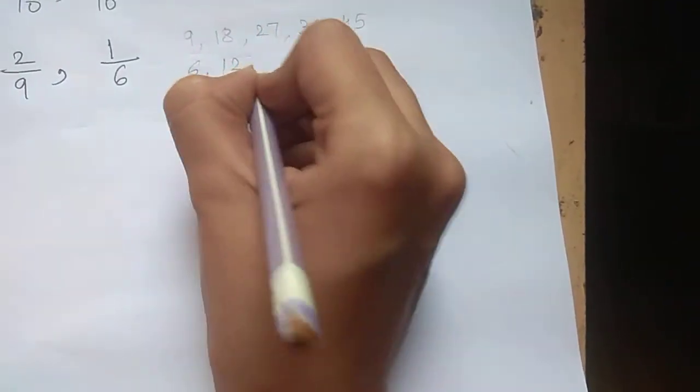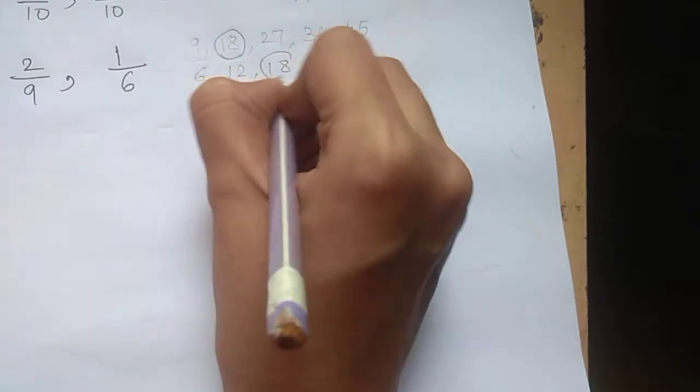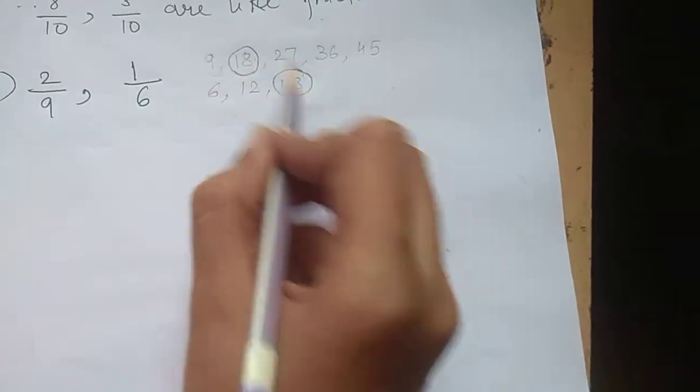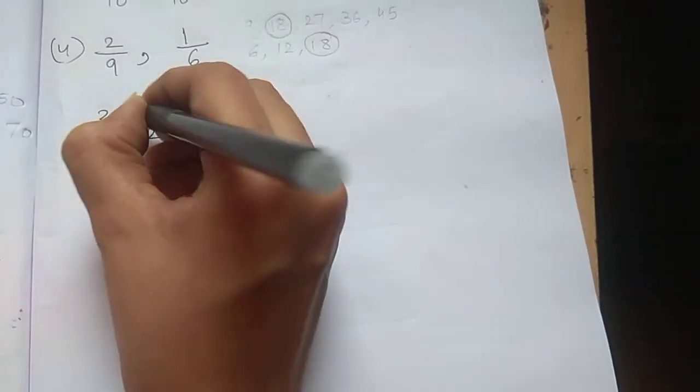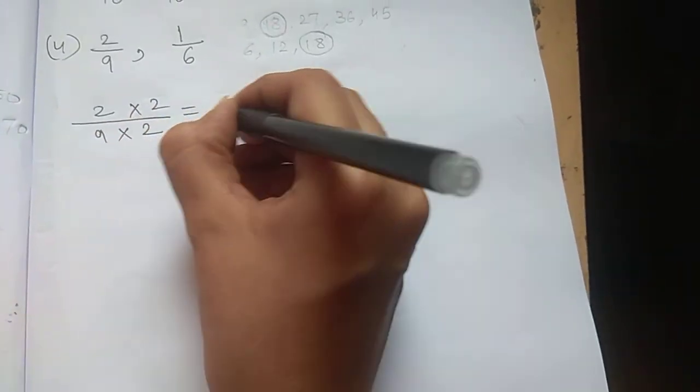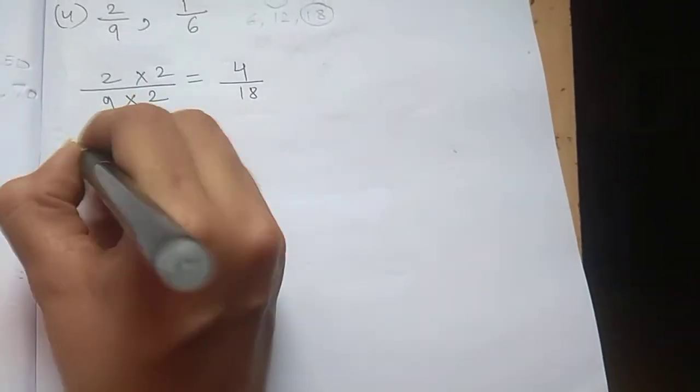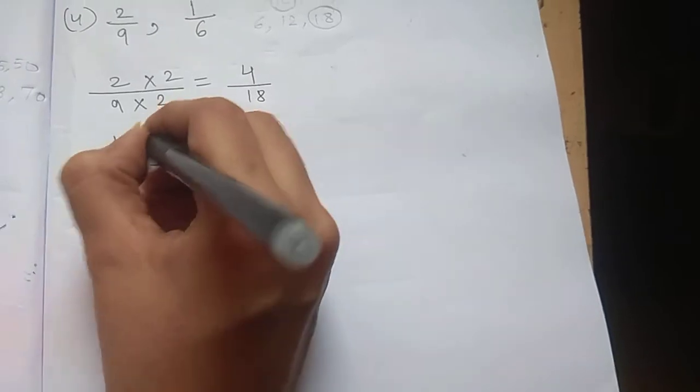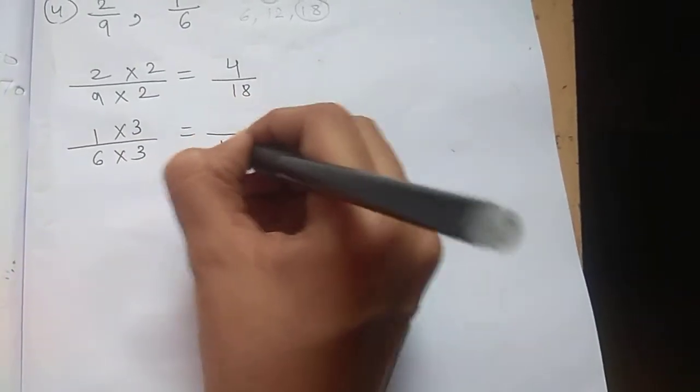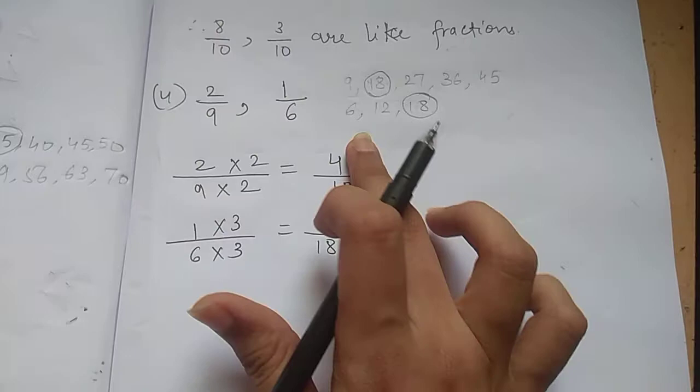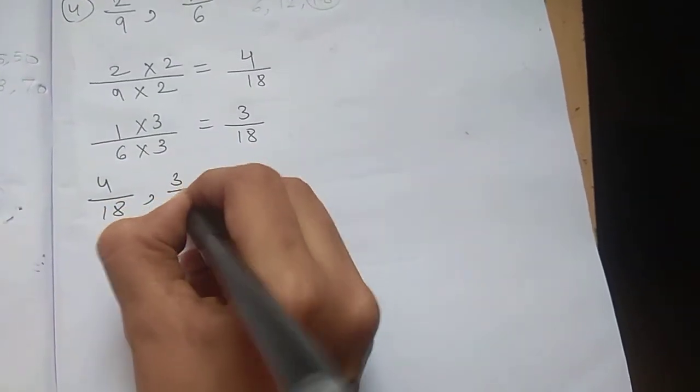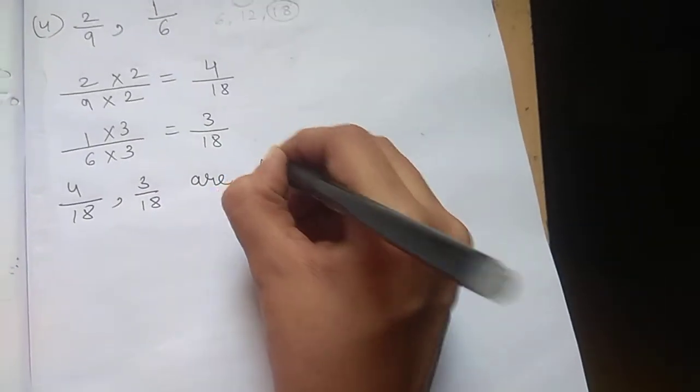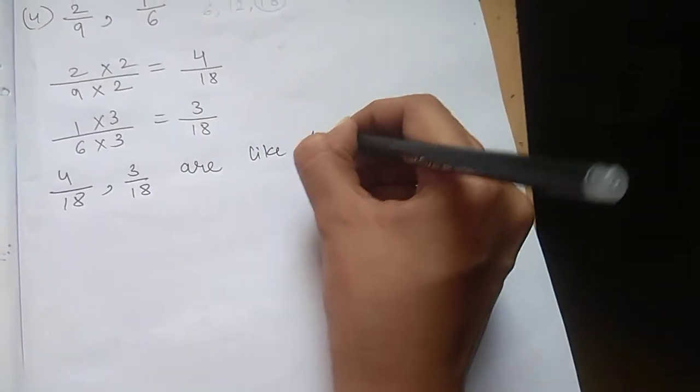See 18, 18. Common number is 18, means denominator will be what? 18. So 2 upon 9, 9 will be multiplied by 2 to get 18, and 1 upon 6 will be multiplied by 3 to get 18 in denominator. So 4 by 18, 3 by 18 are like fractions.